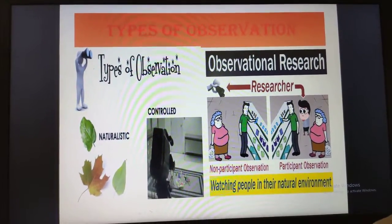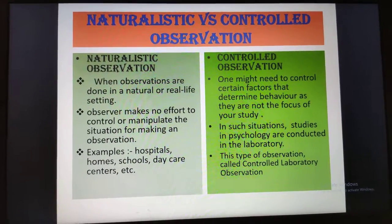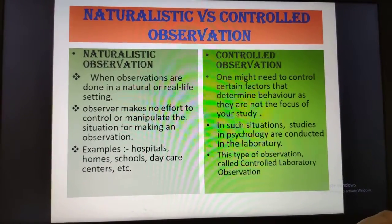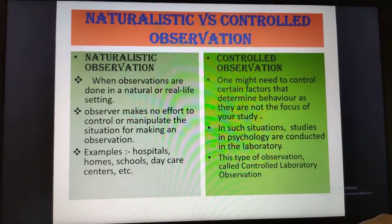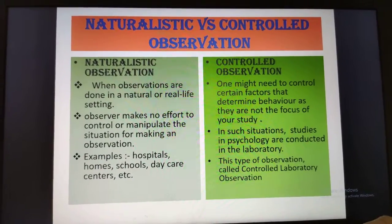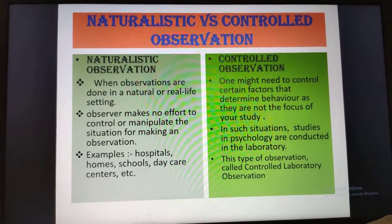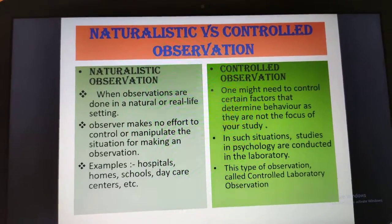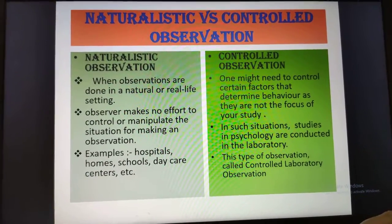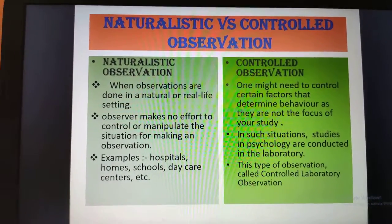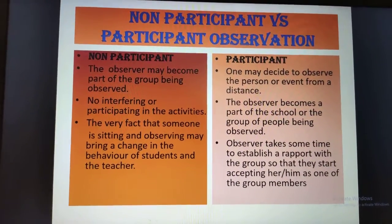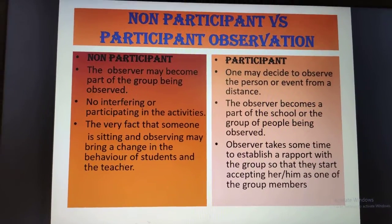Non-participant versus participant observation: in non-participant observation, the observer does not become part of the group being observed, and the person being observed may not be aware they are being observed. For example, if you want to observe patterns of interaction between nursery children and their teachers, you may sit in the corner of the class and not interfere in their day-to-day activities. In participant observation, the observer becomes a part of the school or group of people being observed.